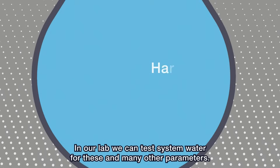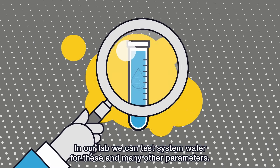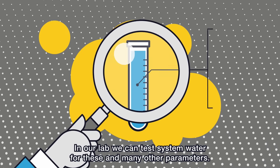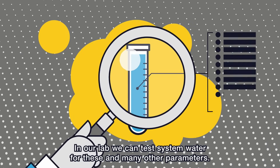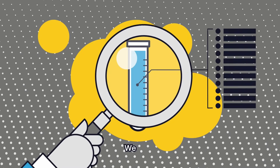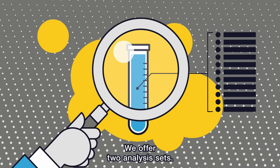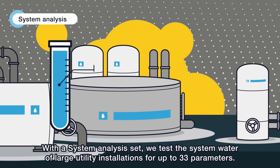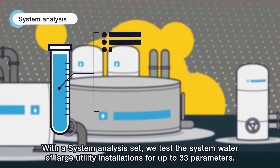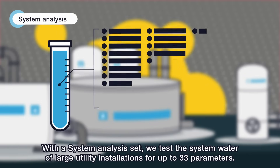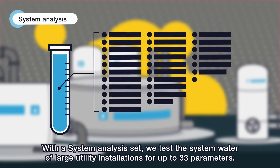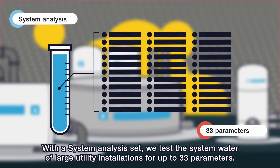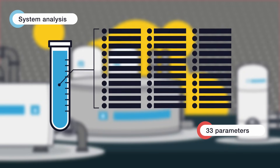In our lab, we can test system water for these and many other parameters. We offer two analysis sets. With a system analysis set, we test the system water of large utility installations for up to 33 parameters.